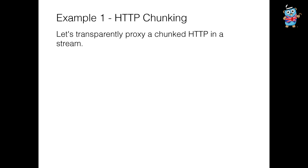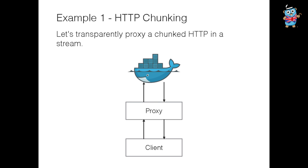Speaking of HTTP, let's go to our first example: HTTP chunking. This comes from some work I was doing at Weave about six months ago. We want to transparently proxy some chunked HTTP in a stream — meaning I don't want to buffer the whole thing in memory at once, just do it piece by piece. By transparently, I mean I don't want to modify any of the data as it goes through — send it exactly byte for byte, like the proxy is not even there.